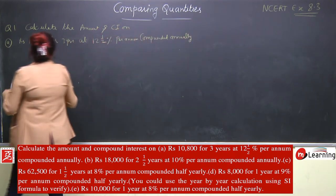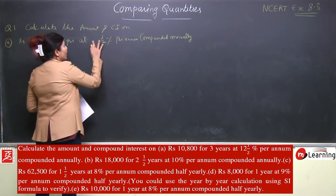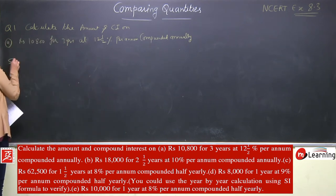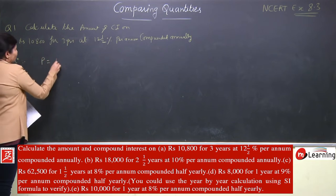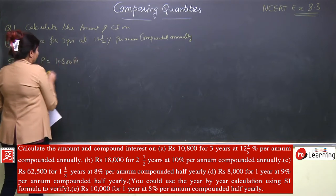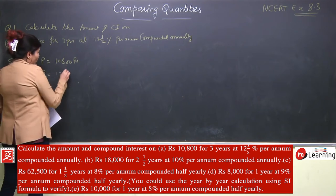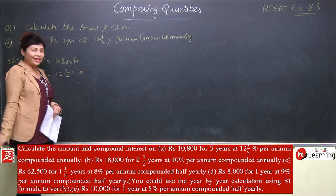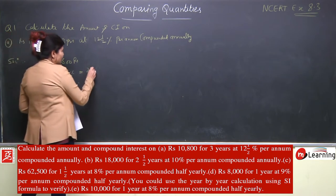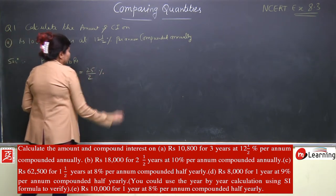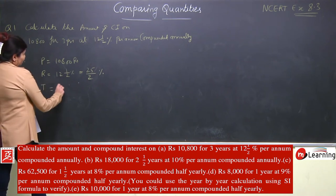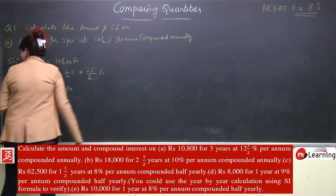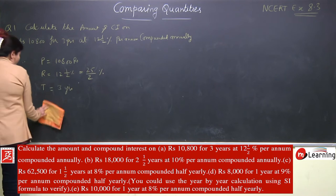This is simple because it's directly given as compounded annually. Given values: P = Rs 10,800, rate = 12.5% = 25/2 percent (converting mixed numeral to simple fraction), and time n = 3 years. Now applying the formula, I'll directly substitute values as we've already memorized it.